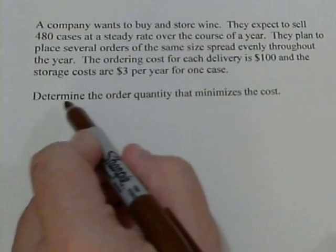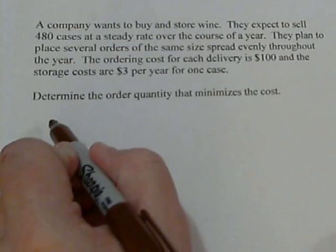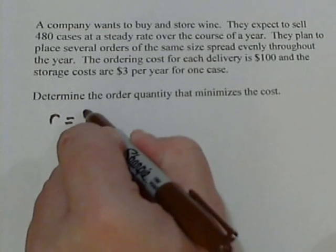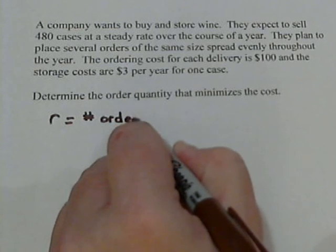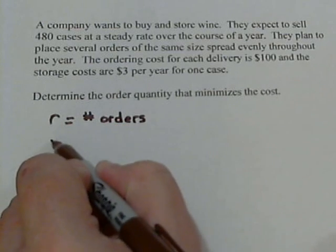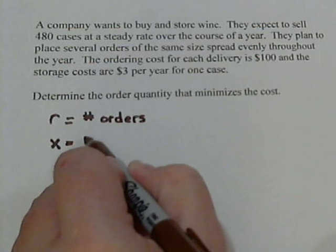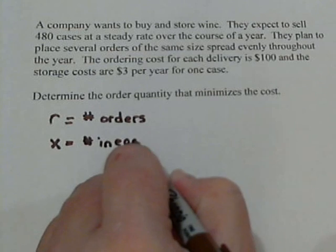We want to determine the order quantity that minimizes the cost. So we're going to need a few variables here. Let's use R to stand for the number of orders each year. And we'll let X stand for the number in each order, so the number of cases in each order.